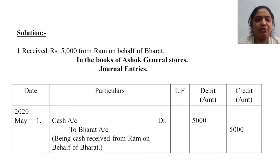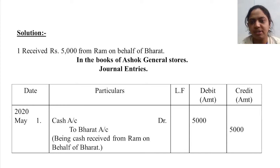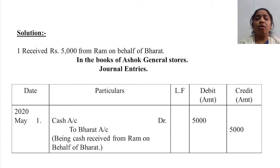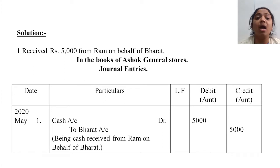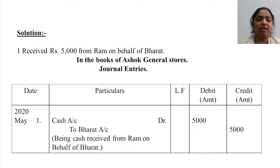Let's start with transaction number 1: receive Rs.5,000 from Ram on behalf of Bharat. The title should be 'Books of Ashok General Stores - Journal Entries.' In this transaction, cash comes in, and Bharat is the giver. So the journal entry is: Cash Account Debit to Bharat, Rs.5,000. Narration: being cash received from Ram on behalf of Bharat.